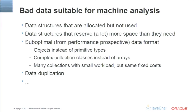Here are some high-level problems applicable to any language that are suitable for machine analysis: data structures that are allocated but not used; data structures that reserve a lot more memory than they actually need; suboptimal data formats, such as objects used instead of primitive types, or complex collections used where simple linear arrays would work, or allocating a large number of small collections where the workload is small compared to the fixed costs. Data duplication is another source of overhead.